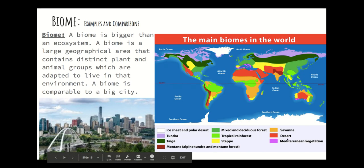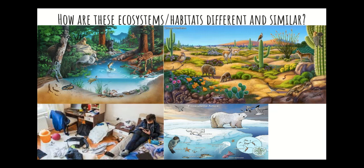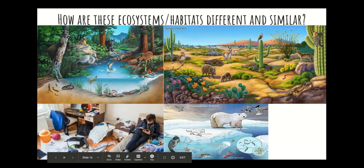The colors on the map link up with the map key. The red parts are the desert biome; the light purple is the tundra biome. Biomes have similar animal groups, plant life, and similar climate — hotness, coldness — so those animals can survive there. Here are examples: a wooded area ecosystem, a desert area with cacti and animals adapted to little water, and colder areas like the North Pole.